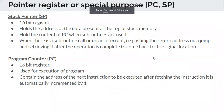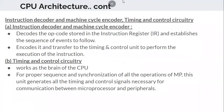When a particular line is being executed, the program counter value is automatically incremented to the next line — no explicit action is needed. The instruction decoder decodes the opcode stored in the instruction register and establishes the sequence of events to follow. It then encodes and transfers to the timing and control unit to perform execution of the instruction.